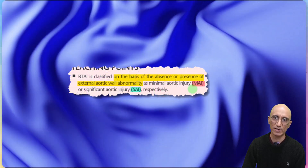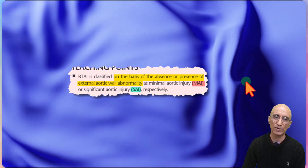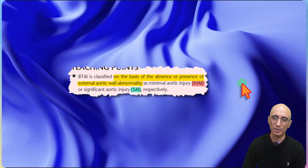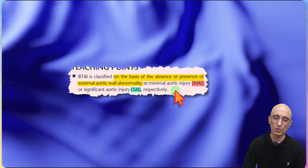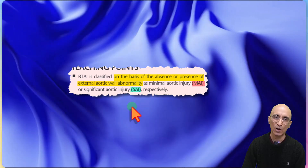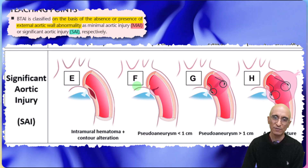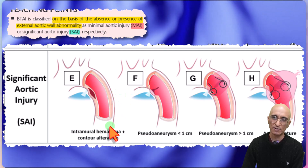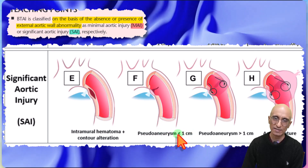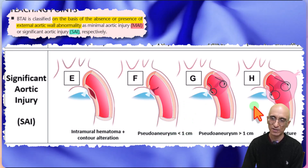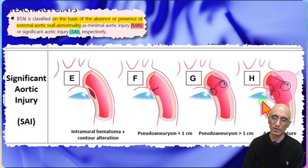In terms of blunt traumatic aortic injury, it is classified based on the presence or absence of external aortic wall abnormality: minimal aortic injury when there is no contour abnormality, and significant aortic injury when there is contour abnormality of the thoracic aorta. Significant aortic injury includes intramural hematoma with contour abnormality, pseudoaneurysm less than or greater than one centimeter with contour abnormality, and aortic rupture like what we saw in our patient.